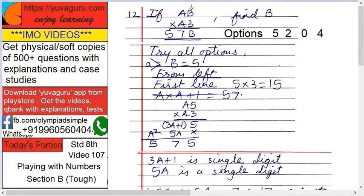Move on to the next problem. If AB into A3 (where A and B are two digit numbers) equals to 57B, then find B. But for finding B you must find A first also. The options given for B are 5, 2, 0, and 4. Now what you do is instead of going straight, you go reverse way and try options of B.